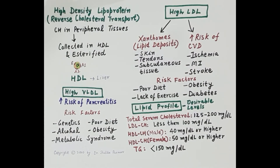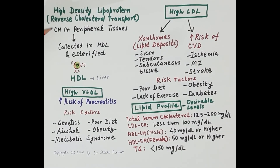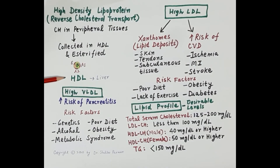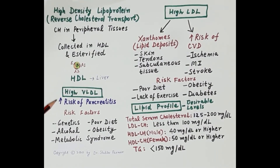Reverse cholesterol transport is mediated by high density lipoprotein (HDL). Cholesterol released into the blood after degradation of membranes from peripheral tissues is collected by HDL, then esterified, and HDL transports this cholesterol to the liver. Therefore, reverse cholesterol transport is the transportation of cholesterol from peripheral tissues to the liver. HDL is termed the good cholesterol.